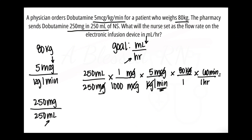We'll do 60 minutes over 1 hour, and the minutes cancel out. We are now left with the goal: milliliters on top and hours on the bottom. Now we can do the math.